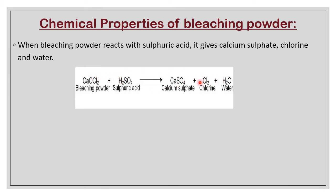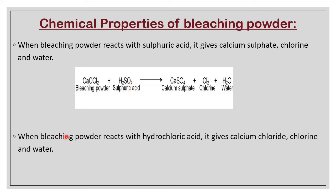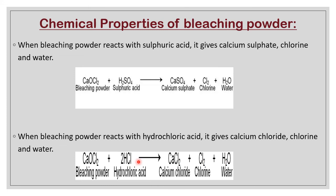These three — CaSO₄, Cl₂, and H₂O — are the products of the reaction between bleaching powder and sulfuric acid. When bleaching powder reacts with hydrochloric acid, it is a similar reaction — only the acid is changed. With hydrochloric acid, chlorides are formed. Which chloride? Calcium chloride — CaCl₂ plus Cl₂ plus water.